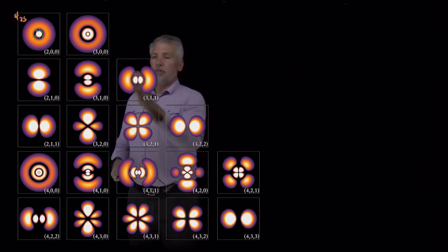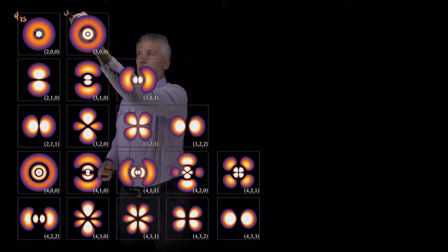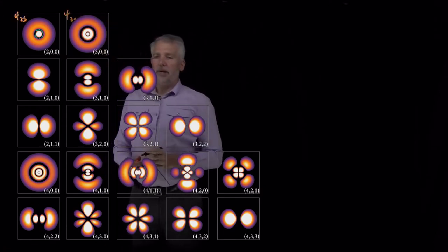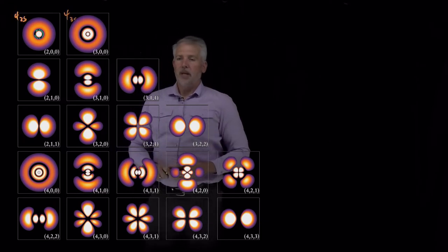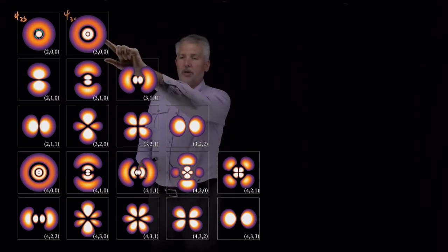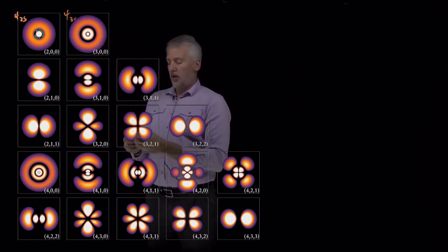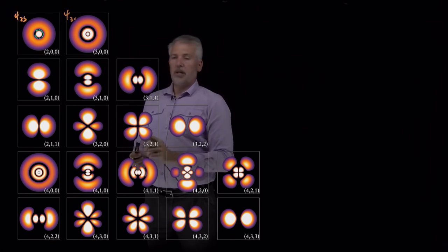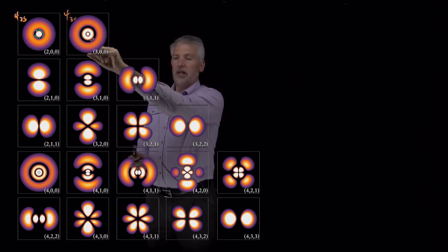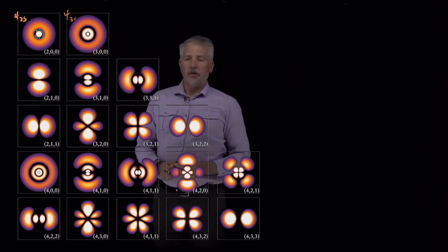And likewise, if we move up to a larger value of n to the 3s orbital, then the 3s orbital has two radial nodes, one at a smaller distance and one at a larger distance. So you can see the inner and the outer radial nodes of this wave function.